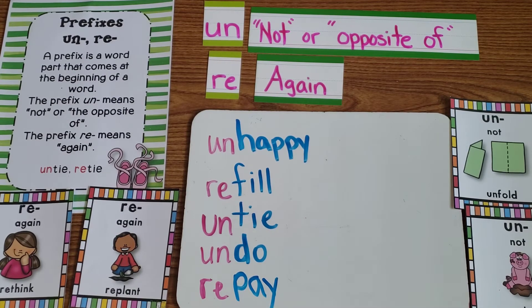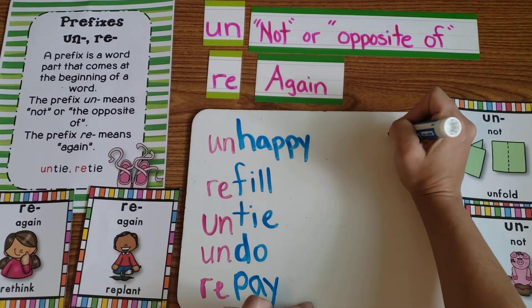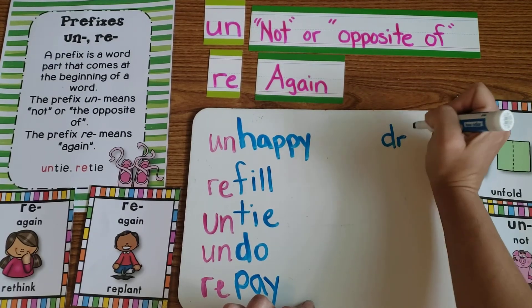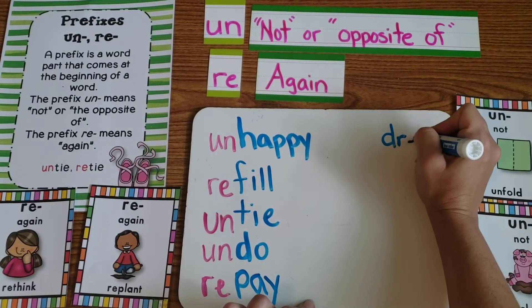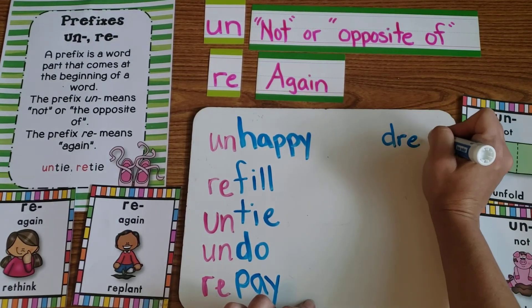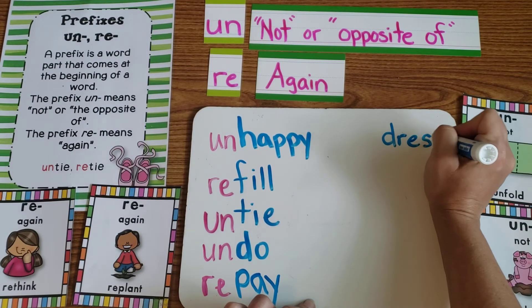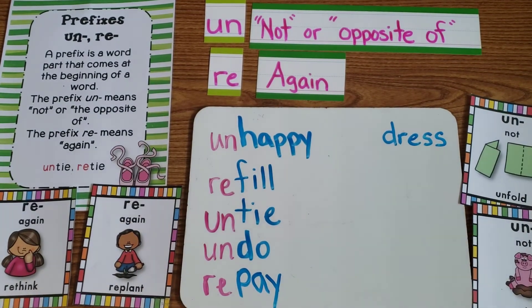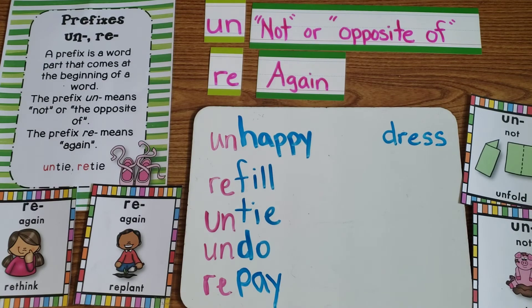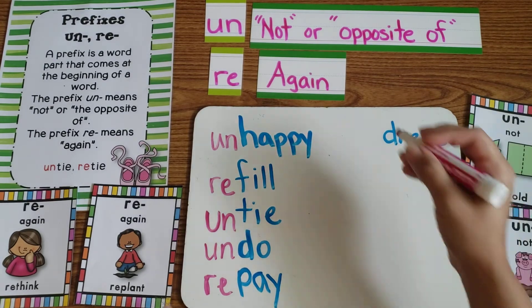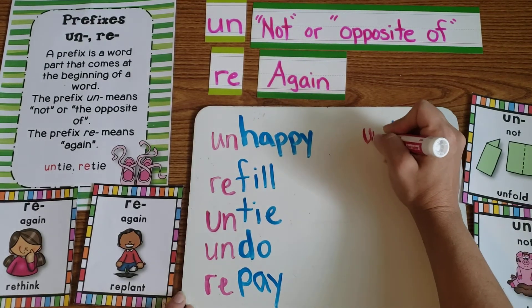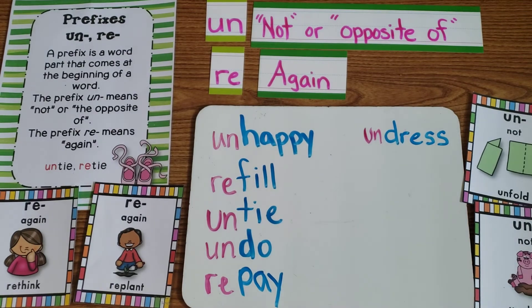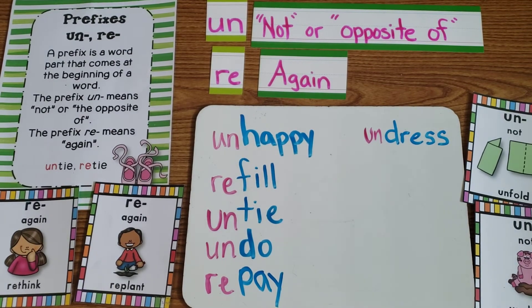Next we have the word 'dress.' We have the 'dr' blend, then the short 'e' sound, and since that's a short vowel we need double s's at the end — 'dress.' But we're going to undress. We're not getting dressed; we're doing the opposite. We're getting undressed.